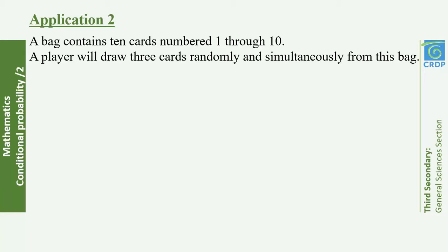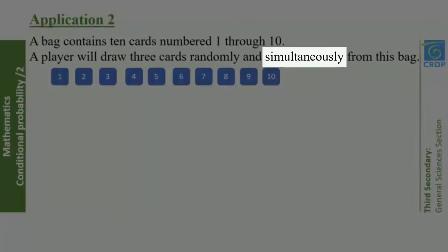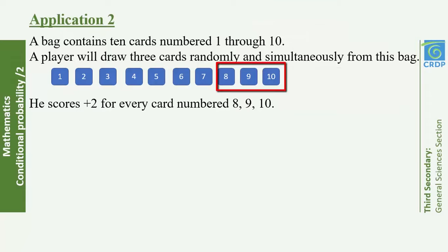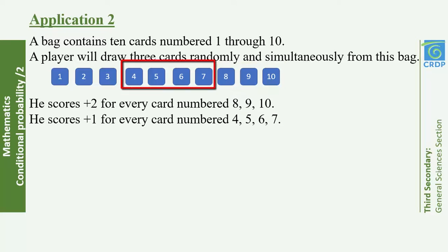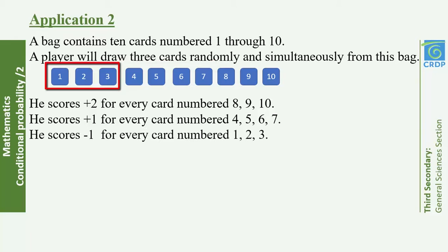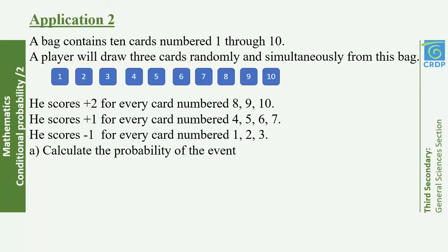Application 2: A bag contains 10 cards numbered 1 through 10. A player draws three cards randomly and simultaneously — again it's a combination. The player scores +2 for every card numbered 8, 9, or 10; scores +1 for every card numbered 4, 5, 6, or 7; and scores −1 for every card numbered 1, 2, or 3.